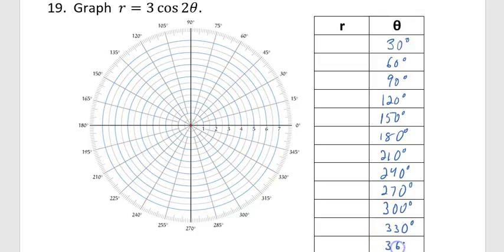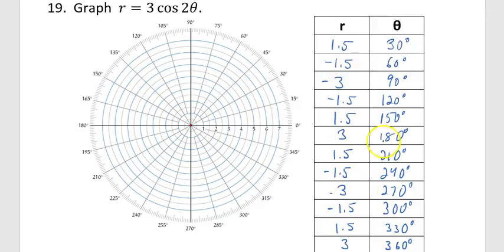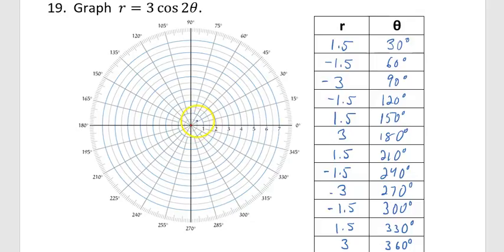Continuing with 330 and 360, I find the r value for each. For the equation 3 times the cosine of 2θ, plug in each theta value — for example, 3 times cosine of 2 times 30, then 3 times cosine of 2 times 60, and so on. Now we have a list of all our points. Pick theta in increments of 30, plug into the equation, get the r values, then plot the points in order and connect them like connect the dots — it should graph this rose for us.